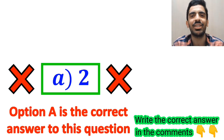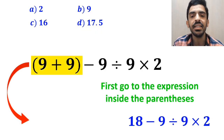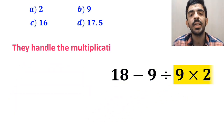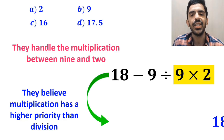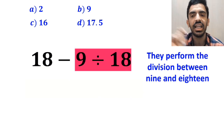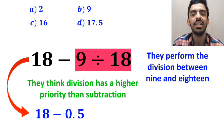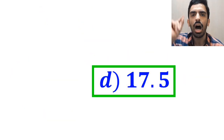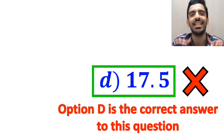However, it's not the correct answer. Some other people, when solving this question, first go for the expression inside the parenthesis and write it as 18 minus 9, divided by 9, then times 2. In the next step, they handle the multiplication between 9 and 2 first, because they believe multiplication has higher priority than division. So they rewrite the expression as 18 minus 9 divided by 18. Then they perform the division between 9 and 18, thinking division has higher priority than subtraction, simplifying to 18 minus 0.5, which gives them 17.5. They conclude that option D is the correct answer — but we were tricked, and it's not correct either.